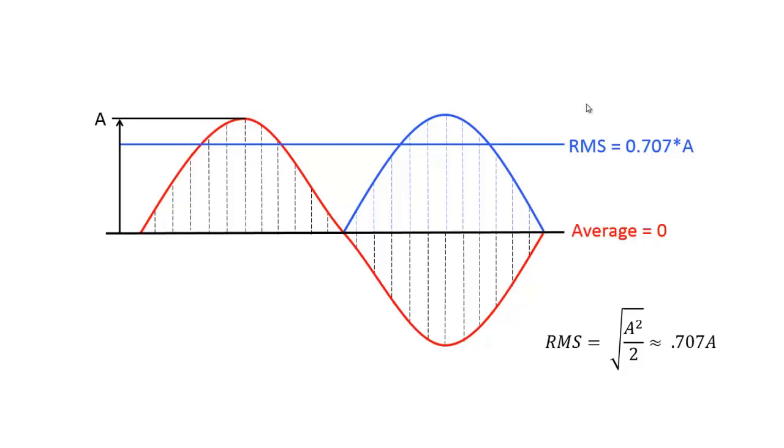A different way we could express it is in RMS format, or by taking the peak and multiplying it by .707. This gives a better representation of the equivalent steady-state energy of that sine wave.